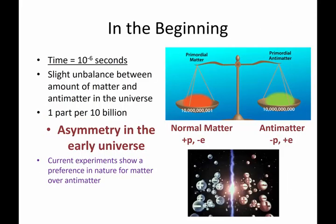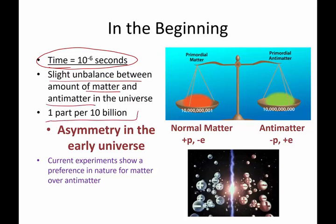Now, at about time equals 10 to the negative six seconds after the Big Bang, the math predicts, and then experimental results also reinforce this idea, that there was a slight unbalanced amount of matter and antimatter to the amount of about one part per 10 billion. So if you've got 10 billion particles, there happens to be a slight favoring for normal matter versus antimatter.